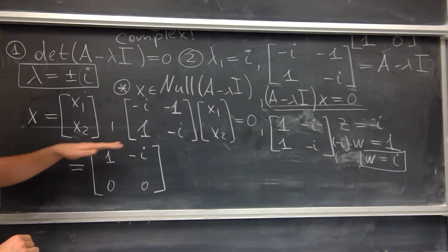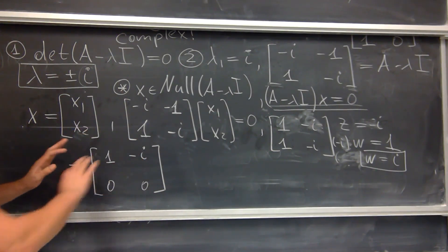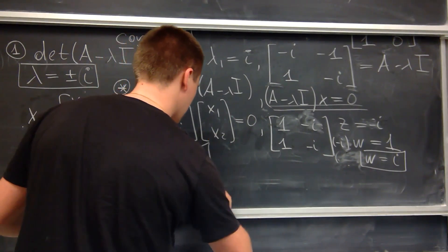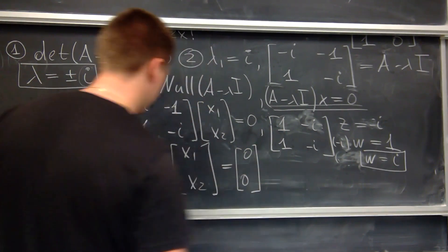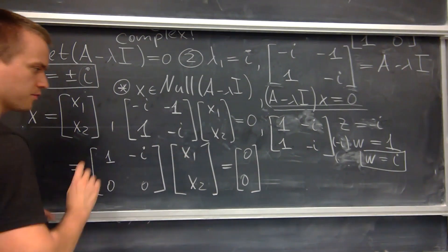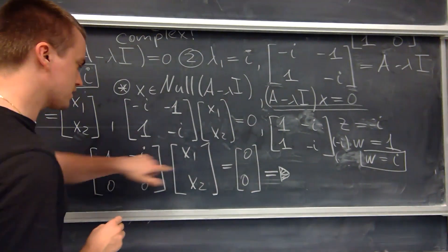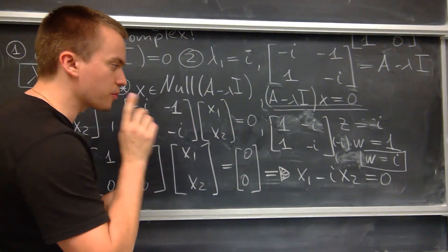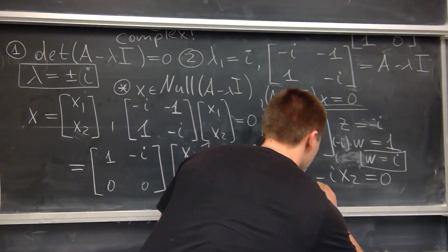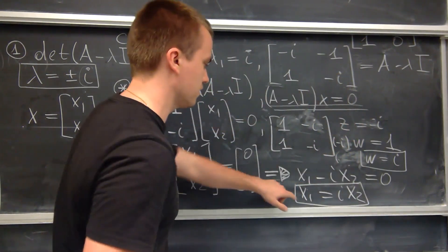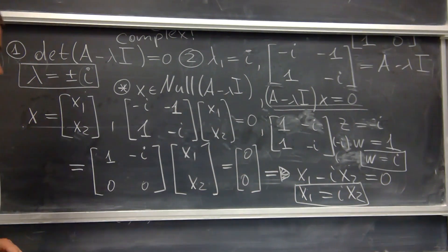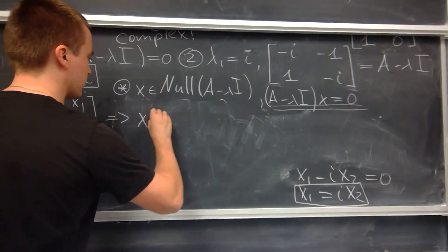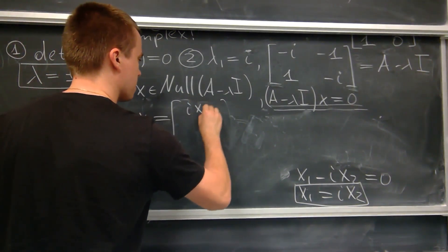By doing any further row operations I cannot simplify this matrix anymore. Multiplying by the vector x1, x2 and setting equal to zero, the second row gives no information. From the first row I get the relation: x1 minus i times x2 equals zero. From here I get x1 equals i times x2. This is my desired relationship between x1 and x2. So my vector x equals x1, x2 equals i times x2, x2.